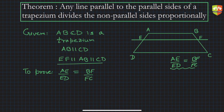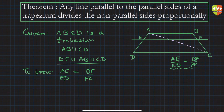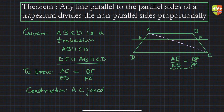It looks like we have to prove some ratios to be equal. Since there is a quadrilateral with four sides, if we can get ratios within a triangle, we can use the Basic Proportionality Theorem or its converse. So let's do a construction — we will join AC. We get two triangles and we have parallel sides, so now we can proceed.